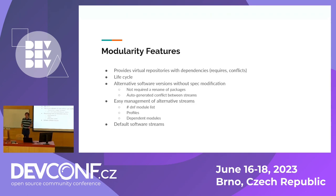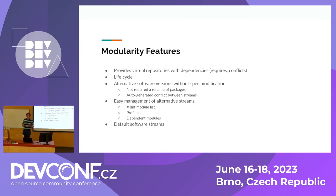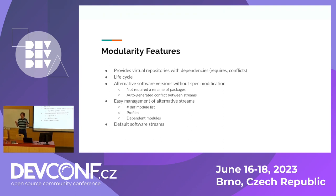Before talking about modularity rules, let's cover what modularity actually provides, because this is sometimes overlooked. Modularity provides virtual repositories with dependencies — these repositories have requires and conflicts. It also allows you to set alternatives with different life cycles. For some distributions, this is a key feature: how to deliver software to users with explicit, visible statements that it has a limited life cycle compared to the main distribution.